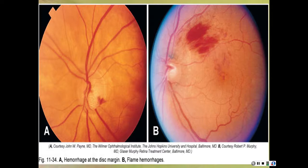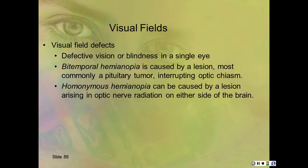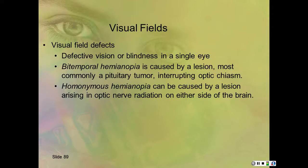Here you see a couple of hemorrhages at the disc margin, and some that fan out—those are called flame hemorrhages. For visual field defects: you can have defective vision or blindness in a single eye, bitemporal partial vision loss losing inner vision of both eyes, or loss of the lateral vision of both eyes. Look for a pituitary tumor or a lesion along the nerves going back to the eye.